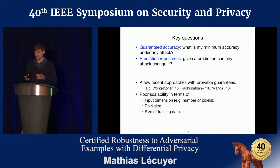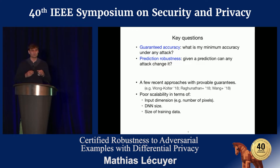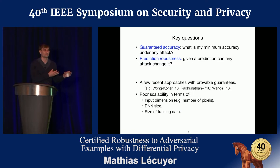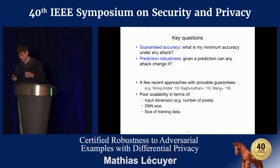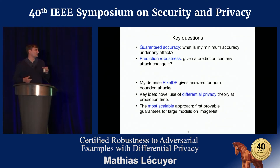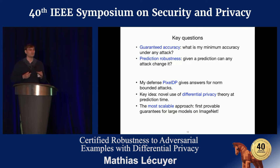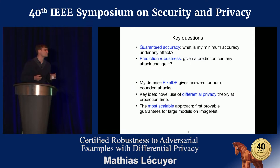You may have heard of recent work answering these questions with provable guarantees, but the key challenge is that they don't scale well across three dimensions: input size, neural network size, and training data size. Given the trend toward larger models and datasets, we can't use them on the models we actually want. My defense, which I call PixelDP, gives provable guarantees of robustness for norm-bounded attacks using a different approach based on differential privacy — and it's by far the most scalable, giving guarantees for large models on ImageNet for the first time.